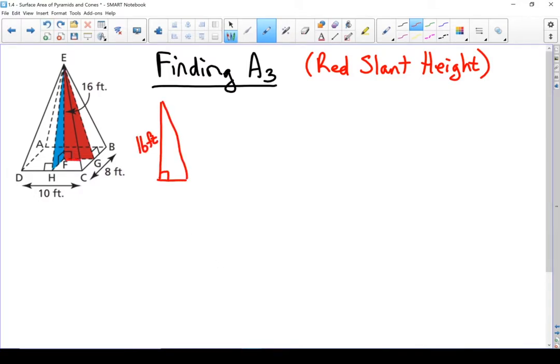Once again, for that bottom leg, this edge actually matches with half of the 10 foot length. We're going to use the Pythagorean theorem to solve for S again.